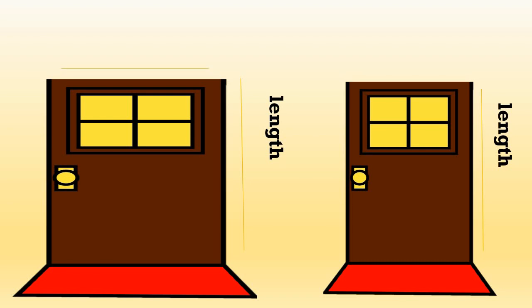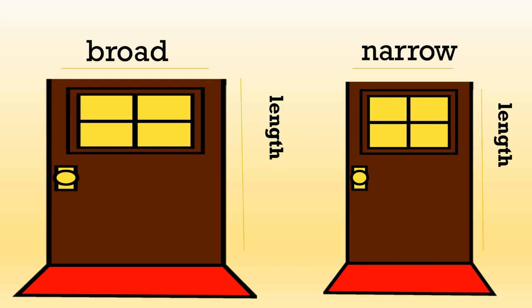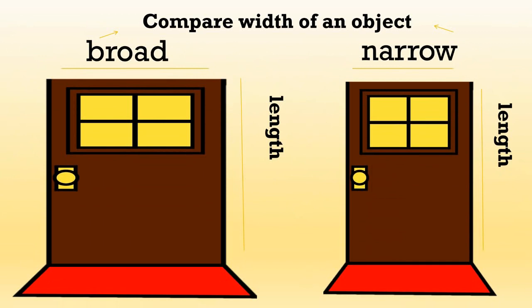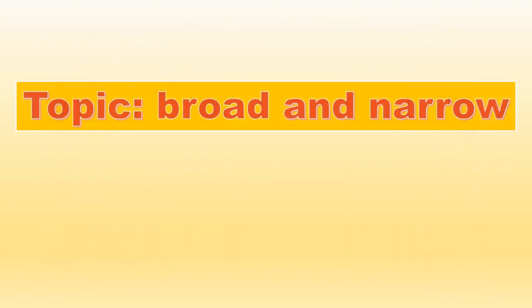The first door is broad and the second one is narrow. So here we got two new words: broad — B-R-O-A-D — and narrow — N-A-R-R-O-W. Can you tell me when these words are used? When we compare the width of an object, we use the words broad and narrow. Today we are going to learn this new topic, broad and narrow, with the help of examples.